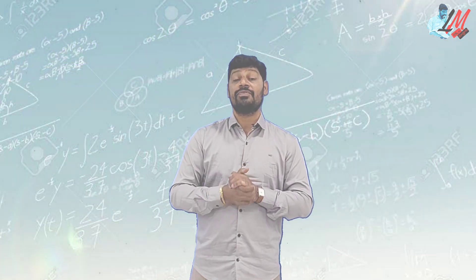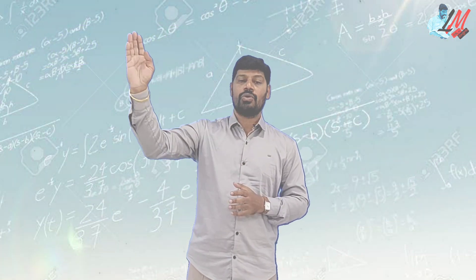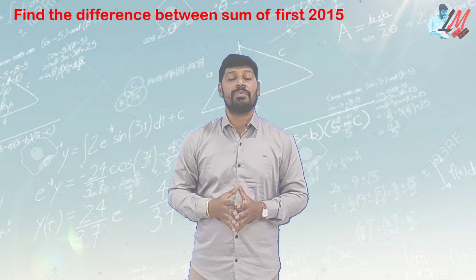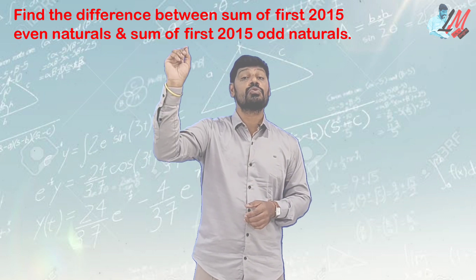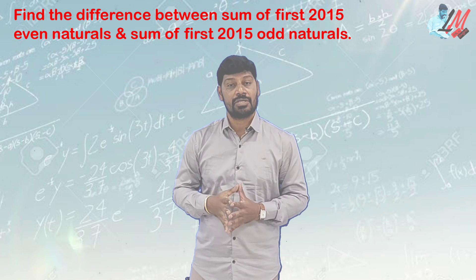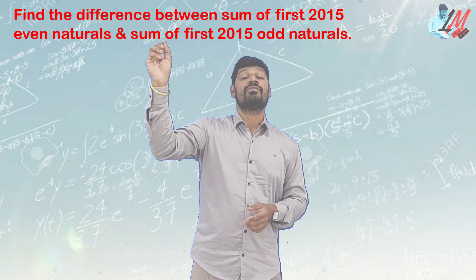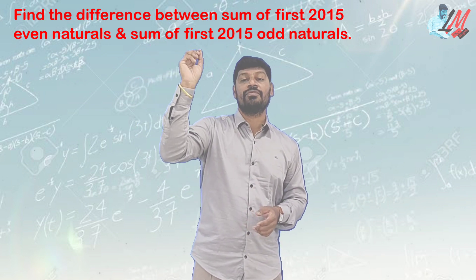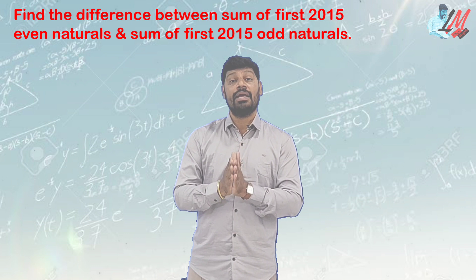So, without wasting time, in the 2015 NMMS paper: find the difference between the sum of the first 2015 even natural numbers and the sum of the first 2015 odd natural numbers.